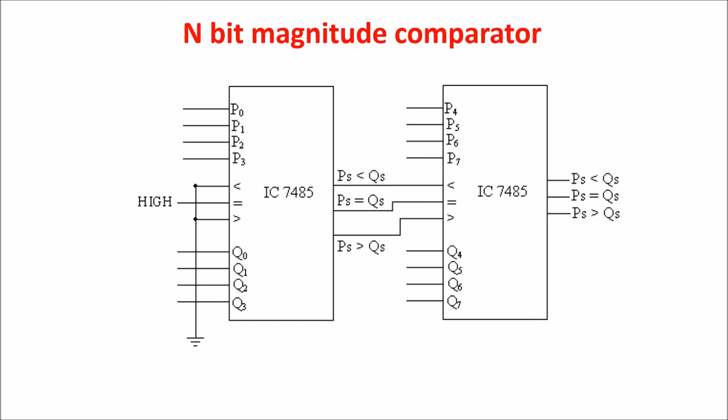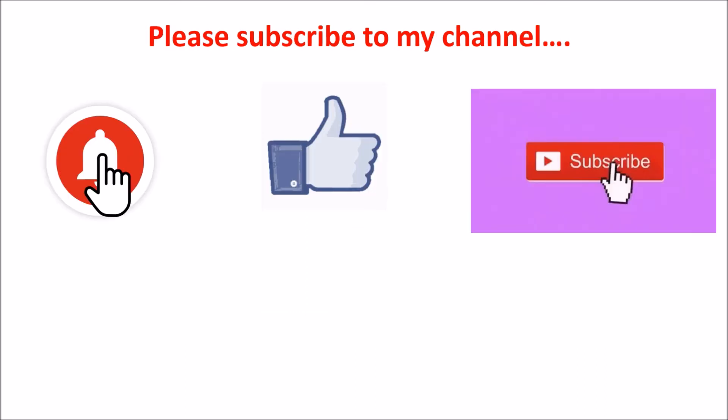In the first comparator you need to put HIGH the equal bit and LOW the other two bits. These 3 extra inputs allow several comparators to cascade for comparison of any number of bits.